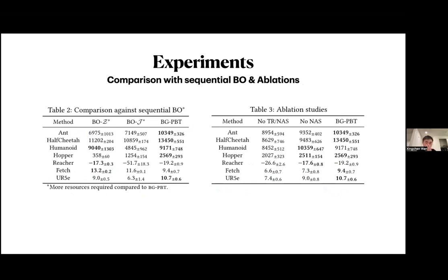We also compare against sequential BO using SMAC, which tunes hyperparameters sequentially with a fixed architecture, training for the full 150 million steps between BO iterations. Even against sequential BO with longer training periods, BGPBT performs better or at least comparably on most environments. Sequential BO outperforms clearly on a few environments like humanoid, reacher, and fetch, but BGPBT remains quite competitive overall.